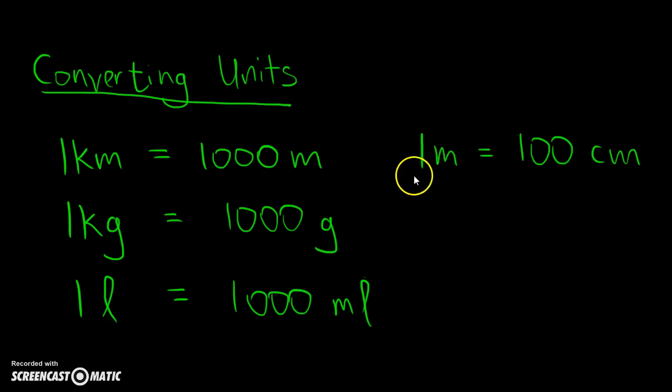One thing to note is that for meters, you can see here one meter equals only 100 centimeters. So for most of the conversions we'll be using, one kilometer, which is the bigger unit, actually gives you 1,000 of the smaller unit.